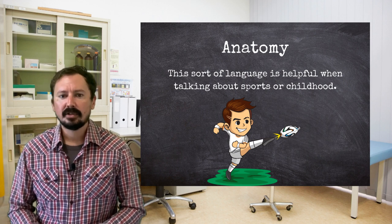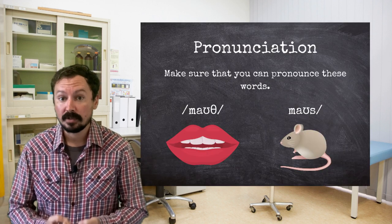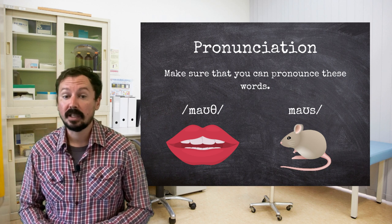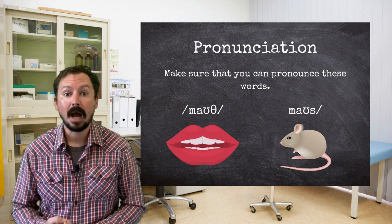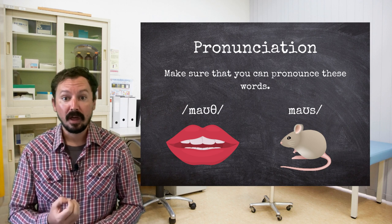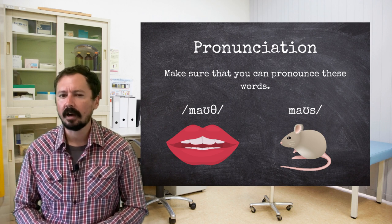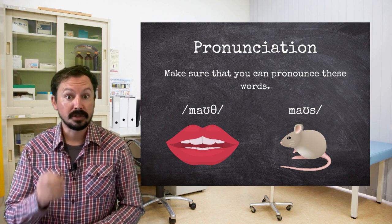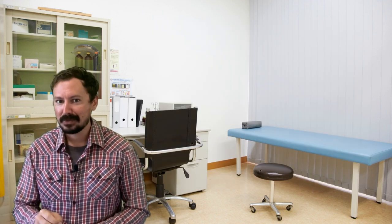Finally, as the topic of health could arise in almost any part of the test, you don't need to know just how to spell these words, but pronounce them as well. Pay particular attention to tricky words like 'mouth'. For many English learners, the sound at the end of this word is very hard to say, and they confuse the words 'mouth' and 'mouse'.